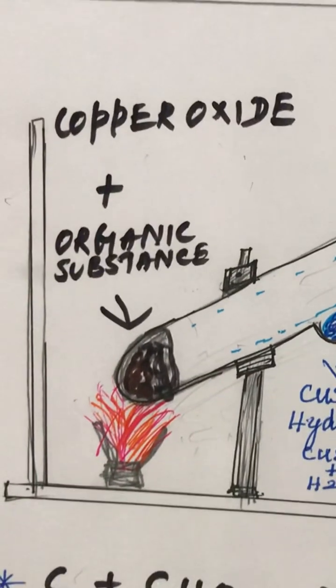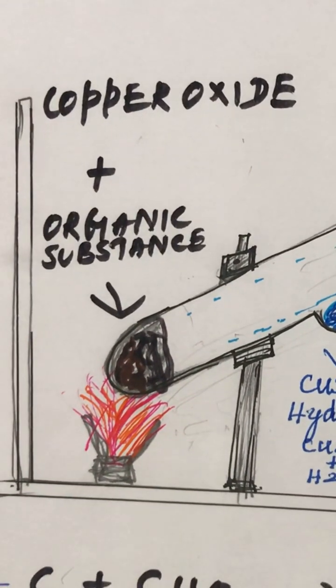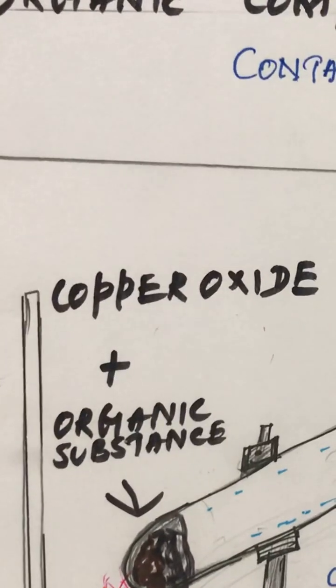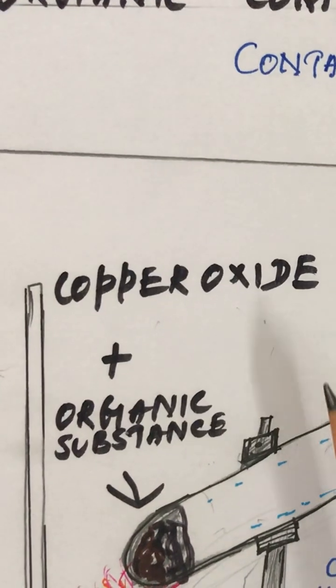In this video we are going to see the experiments that test to identify carbon and hydrogen in an organic compound. For that, the organic compound is treated with copper oxide.